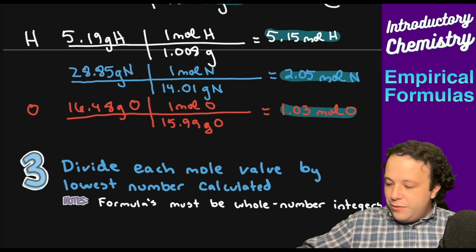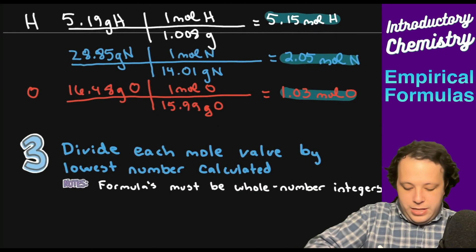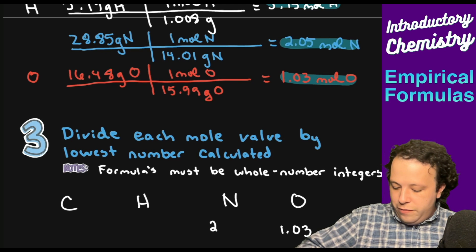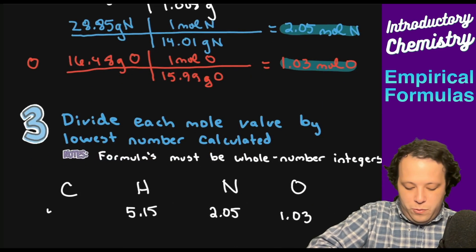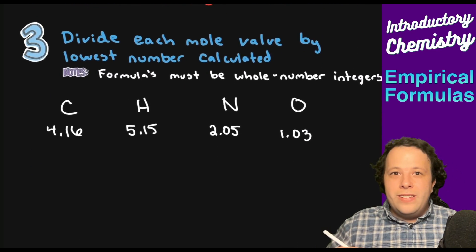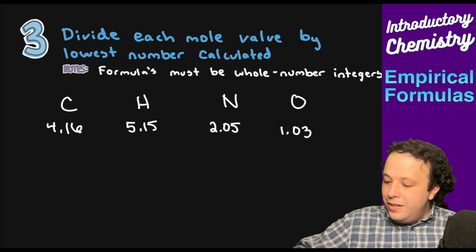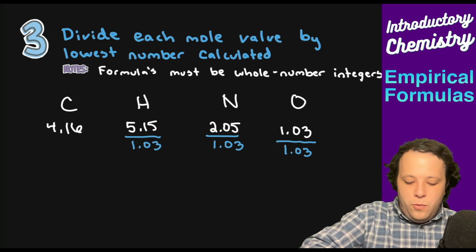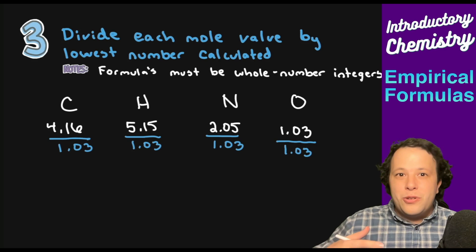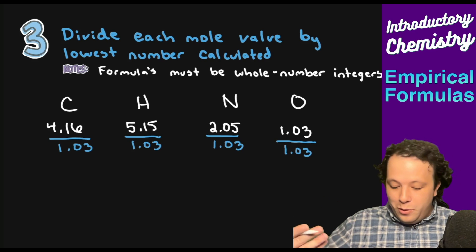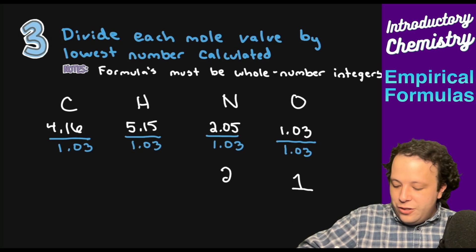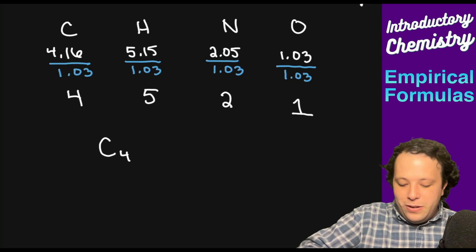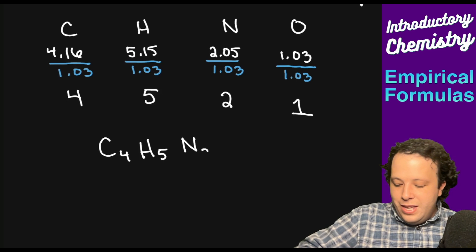Let's recopy these: carbon is 4.16, hydrogen is 5.15, nitrogen is 2.05, oxygen is 1.03. Which one is the smallest? You can quickly see oxygen is your tiniest value at 1.03. So we're going to divide all of these values by 1.03. When you do this, it leads to whole number values representing the subscripts of your empirical formula. For oxygen you get one, nitrogen two, hydrogen five, and carbon four.